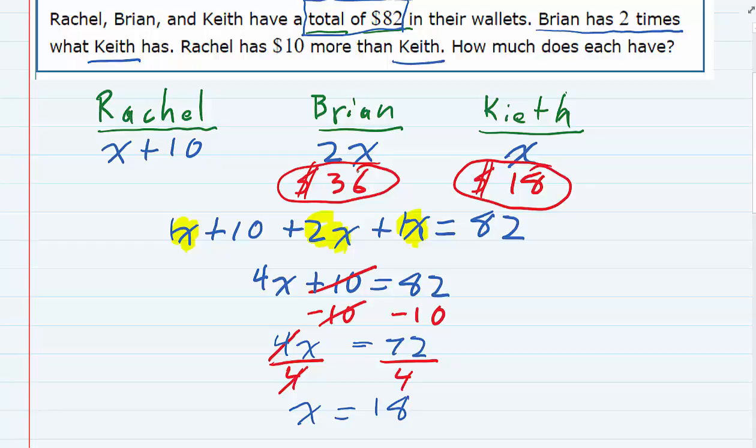So if we add these up, they do add up to $82. We have found out how much each person has in their wallets.